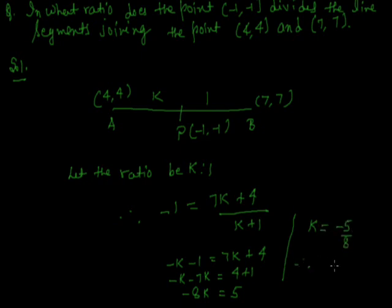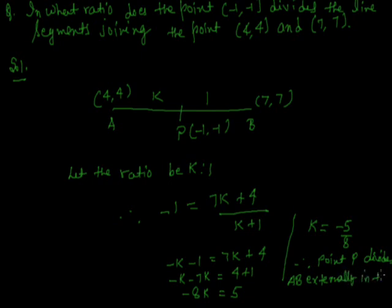Therefore, point P divides AB externally in the ratio 5 is to 8. It is external because the value of k is negative. If k is negative, the point divides externally; if k is positive, it divides the line segment internally.